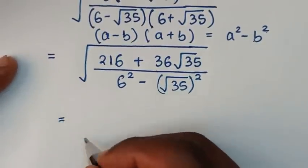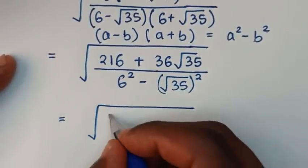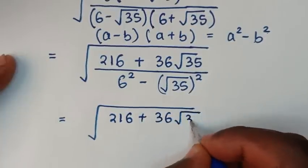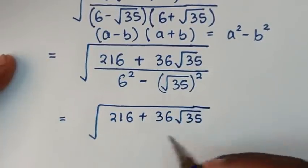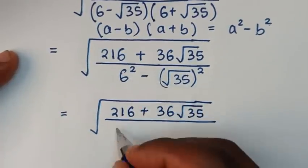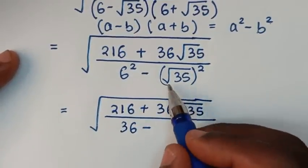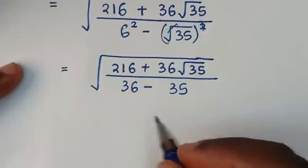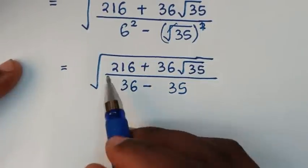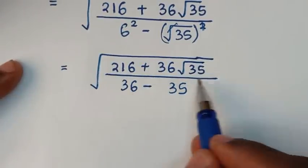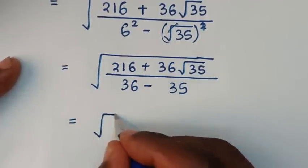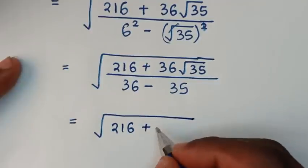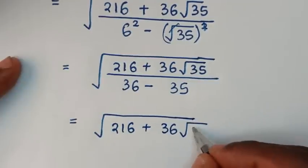Then it will be equal to square root of 216 plus 36 square root of 35, over 6 squared is 36 minus square root of 35 squared. This square root and square cancel, so it will be minus 35. Then 36 minus 35 is 1. So this numerator divided by 1 is still the same — it will be equal to square root of 216 plus 36 square root of 35.